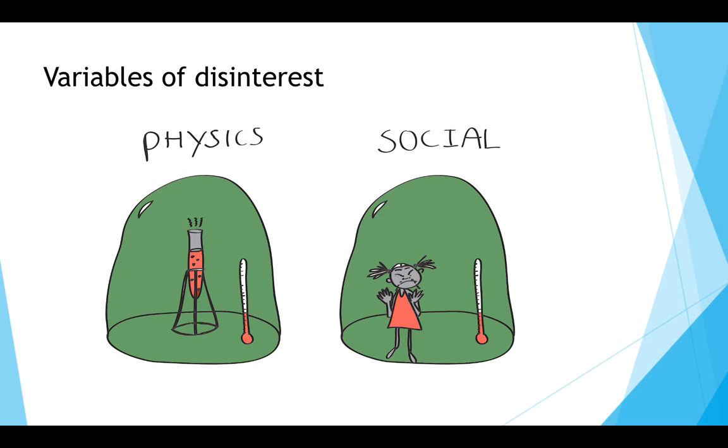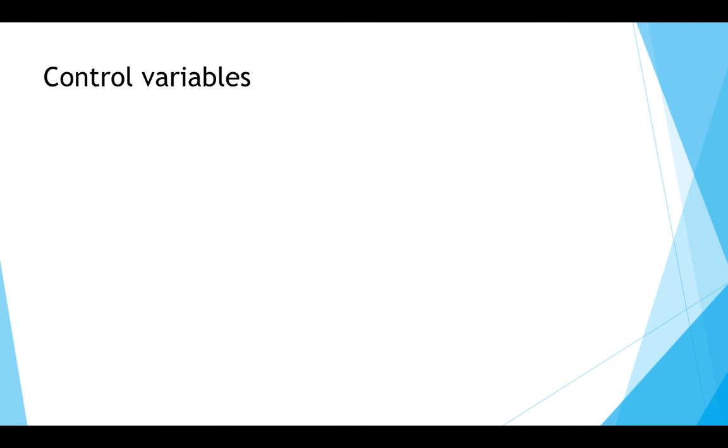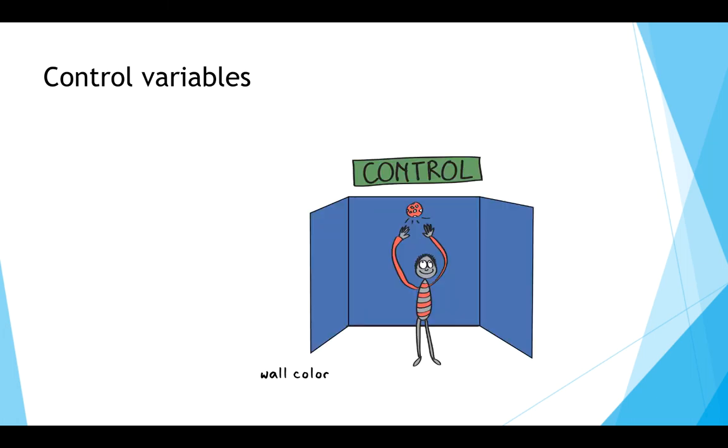Variables that are held constant in an experiment are referred to as control variables. In our example about playing video games, we could make sure that the color on the walls is the same for each condition. We would not want the walls of the control group to be calming blue and the walls of the experimental group to be agitating red.